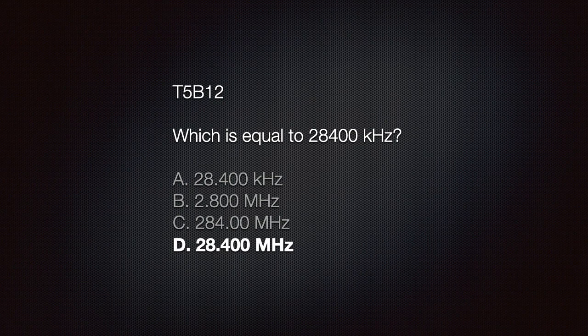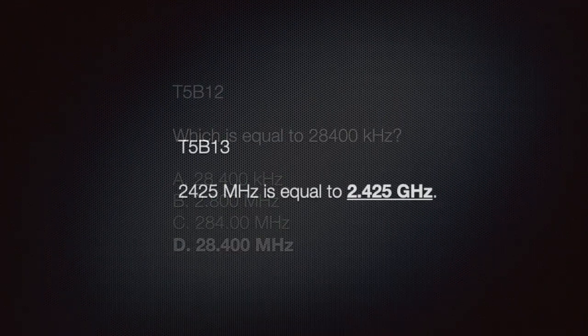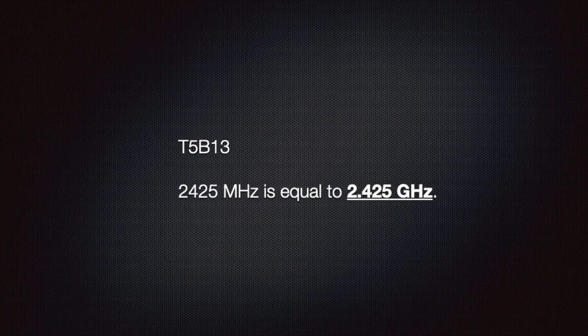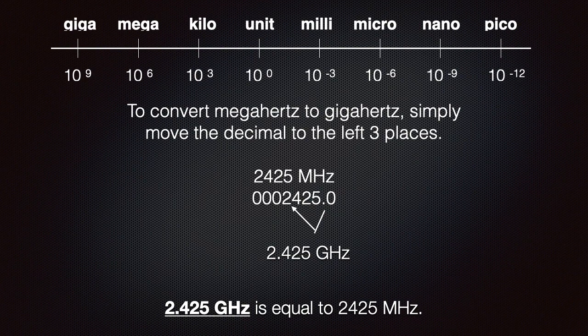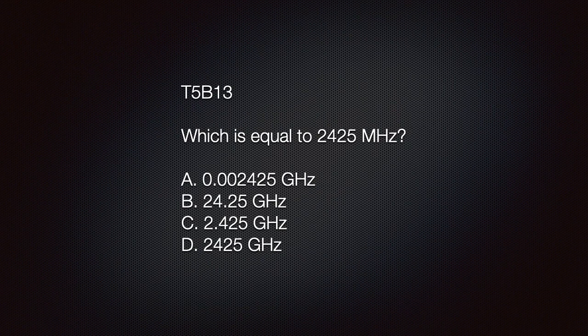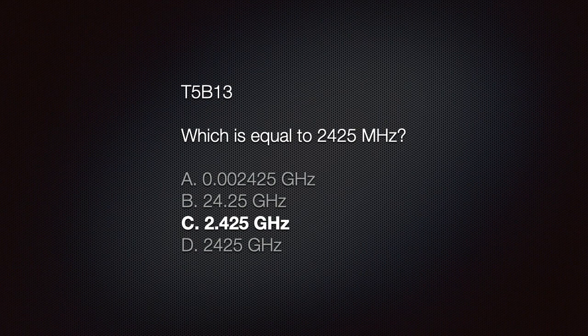The correct answer is D, 28.4 megahertz. We need to know that 2425 megahertz is equal to 2.425 gigahertz. To convert megahertz to gigahertz, simply move the decimal to the left three places. The exam question is: which is equal to 2425 megahertz? A) 0.002425 gigahertz, B) 24.25 gigahertz, C) 2.425 gigahertz, or D) 2425 gigahertz. The correct answer is C, 2.425 gigahertz.